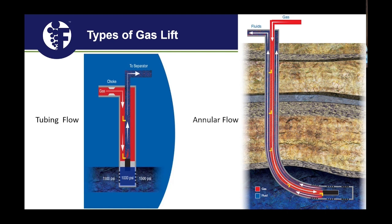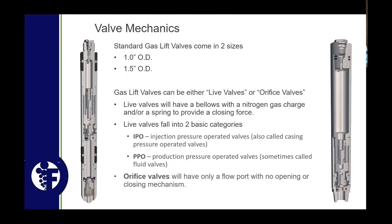Moving into the equipment — specifically the gas valve, how it works, and the types available. The two common sizes are one-inch and one-and-a-half-inch OD valves. What really dictates this is your tubing-casing combination and what you can fit in the well. Industry-wide we try to run an inch-and-a-half valve when possible — it comes off seat a little easier with a larger area and better flow through the valve. That said, we run a lot of one-inch valves, especially when confined to two-and-seven-eighths tubing and five-and-a-half-inch casing.